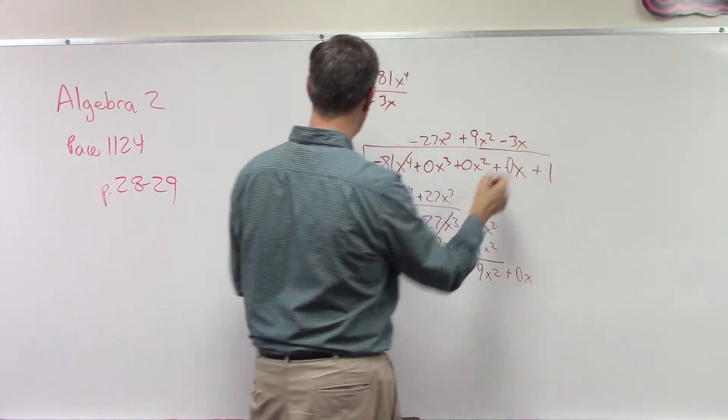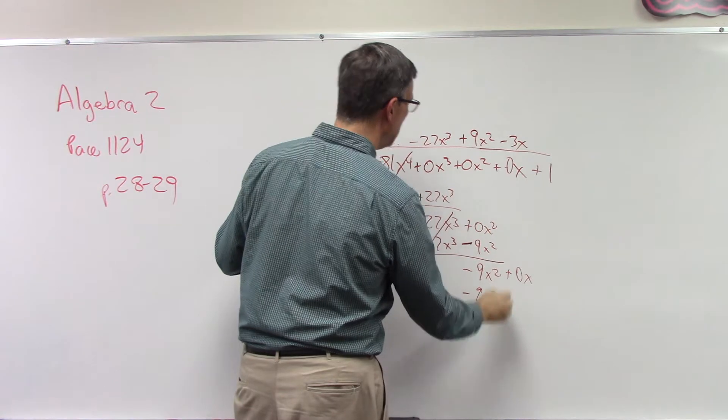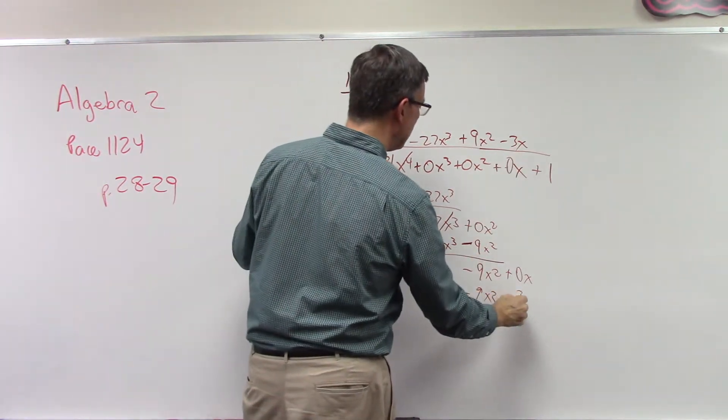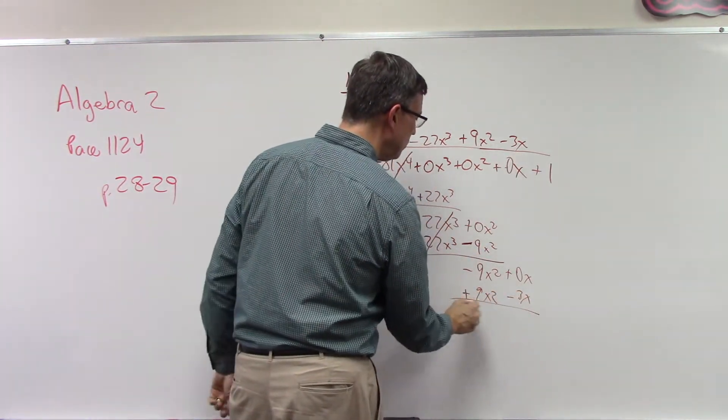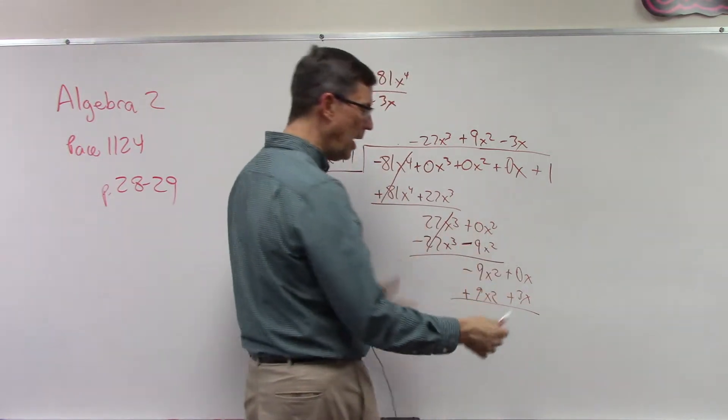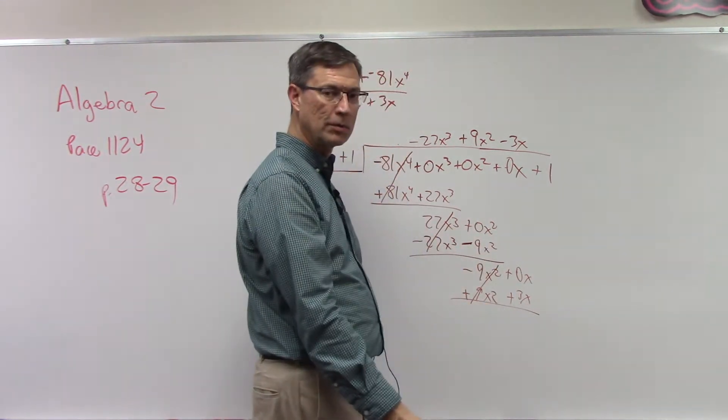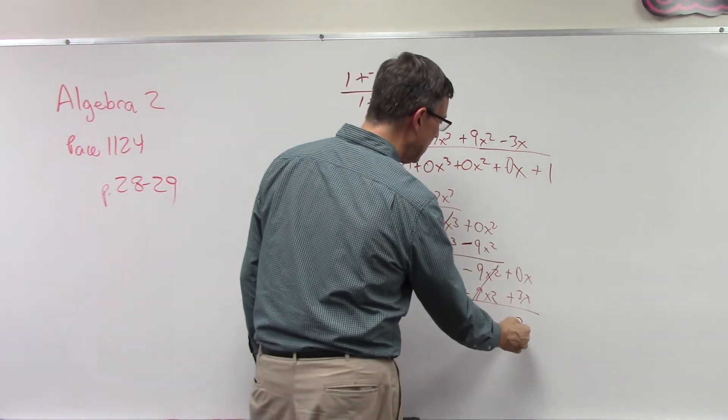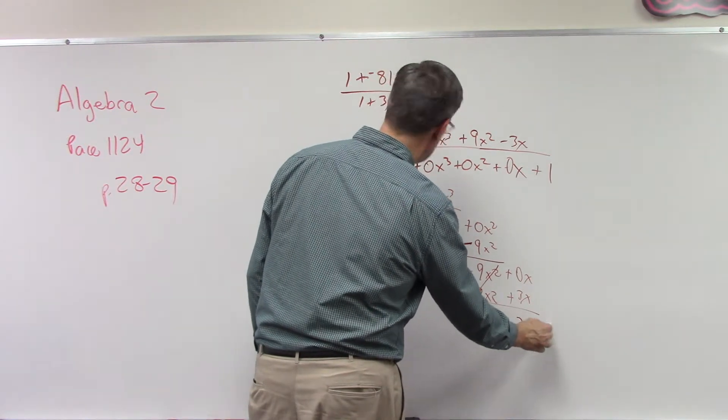I bring down the negative 9x squared, bring down the 0x. Let's move a little faster here. 3x into negative 9x squared is negative 3x. Negative 3x times 3x is negative 9x squared. Negative 3x times 1 is negative 3x. Change them to their opposites, add, this cancels.